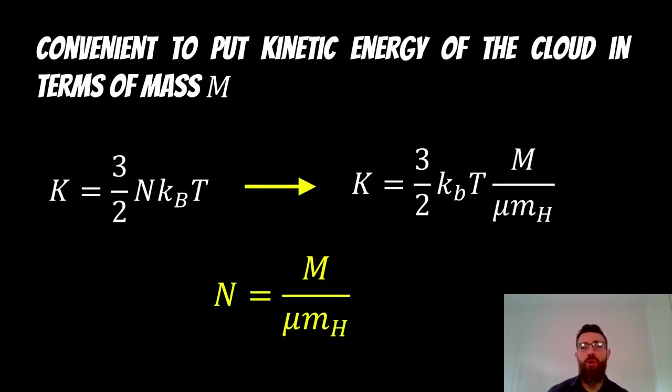But the kinetic energy is not all that useful at the current moment, because it has N, which is the number of particles. And in the real cloud, that doesn't make a great lot of sense to use that. So we can put that in terms of mass instead.